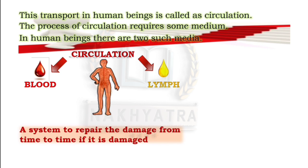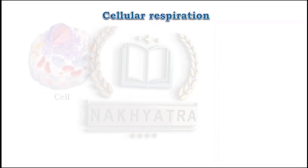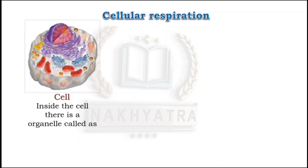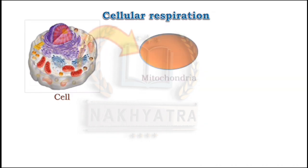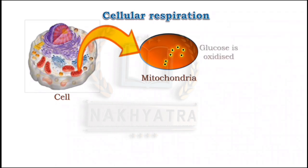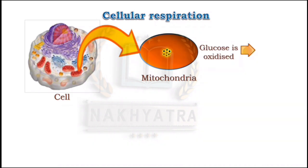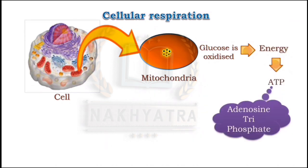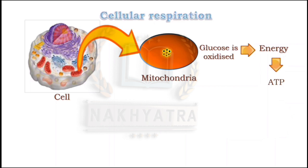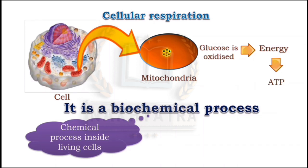Now let us see cellular respiration, which is also called as internal respiration. This is a cell, and inside the cell there is an organelle called mitochondria. Inside the mitochondria, glucose is oxidized — that means glucose is broken down by oxygen to produce energy in the form of ATP, which stands for adenosine triphosphate. Cellular respiration is a biochemical process, meaning a chemical process inside living cells.